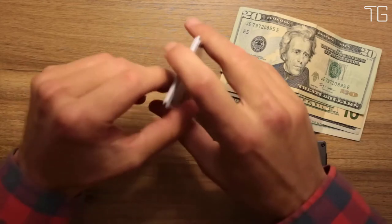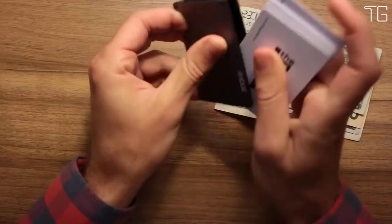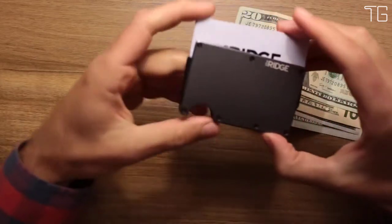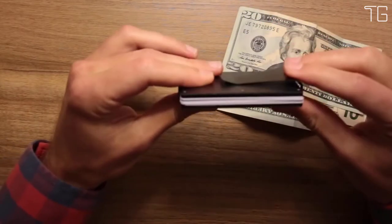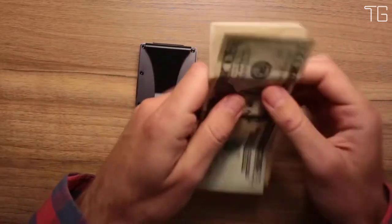The typical leather bifold gets packed with faded receipts and unnecessary cards, resembling something more like a suitcase than a wallet. The Ridge is minimalist without being limiting. It's about carrying less, but always having what you need.